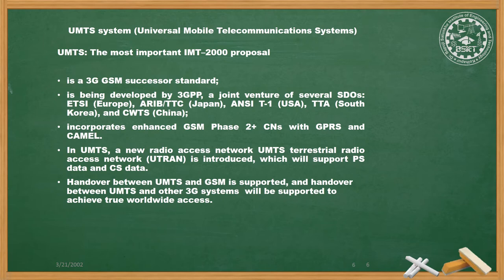UMTS incorporates enhanced GSM Phase 2+ core networks with GPRS and CAMEL. A new radio access network called UMTS Terrestrial Radio Access Network (UTRAN) is introduced. UMTS supports both packet-switched and circuit-switched data. Handover between UMTS and GSM is supported, and handover between UMTS and other 3G systems will also be supported to achieve true worldwide access.